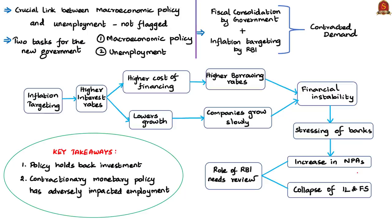The editorial is structured in three parts. In the first part, the author discusses reasons that have led to unemployment in India and calls for a review of RBI's role. In the second part, the author gives suggestions to improve RBI's role. In the final part, the author shares ideas about ways of job creation.